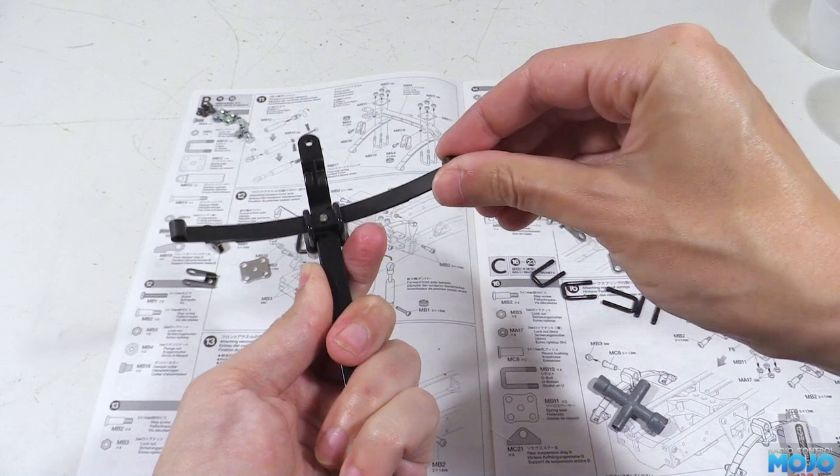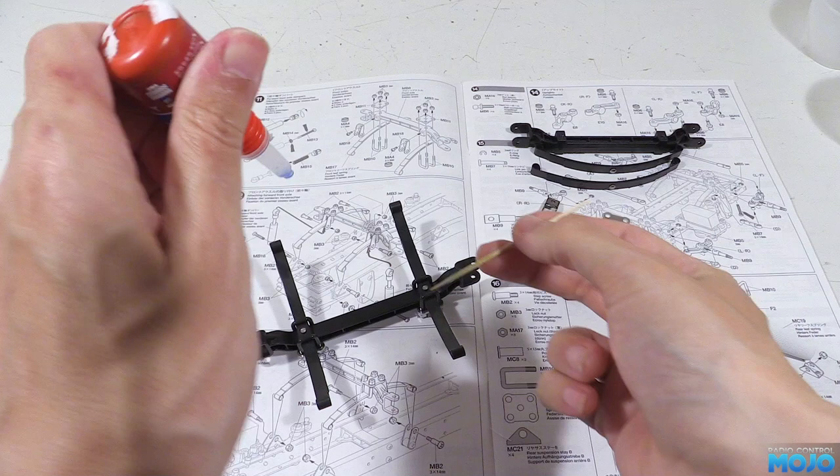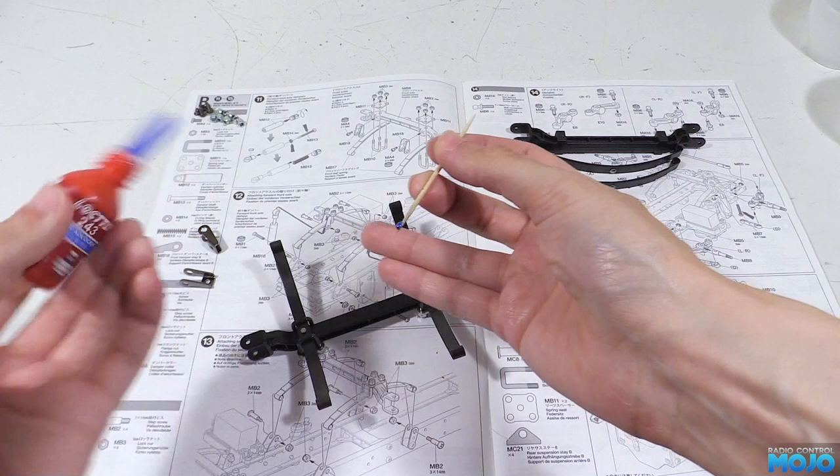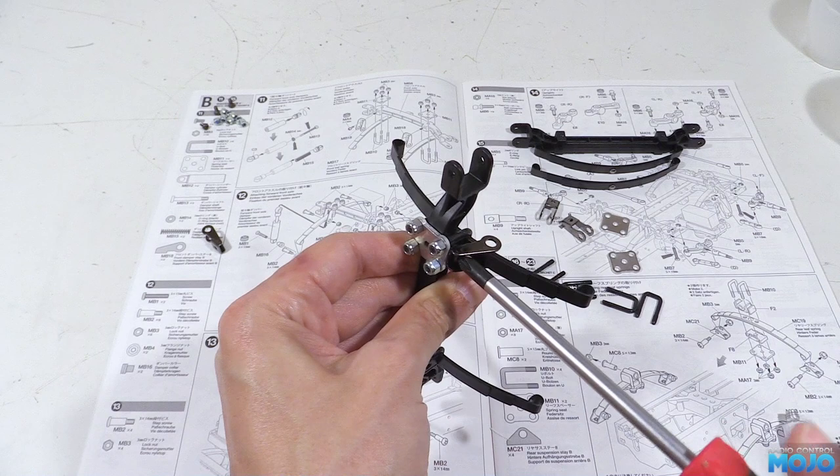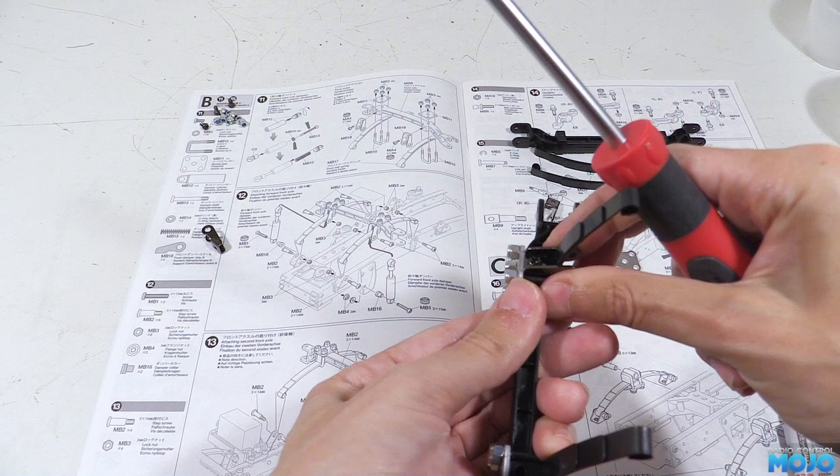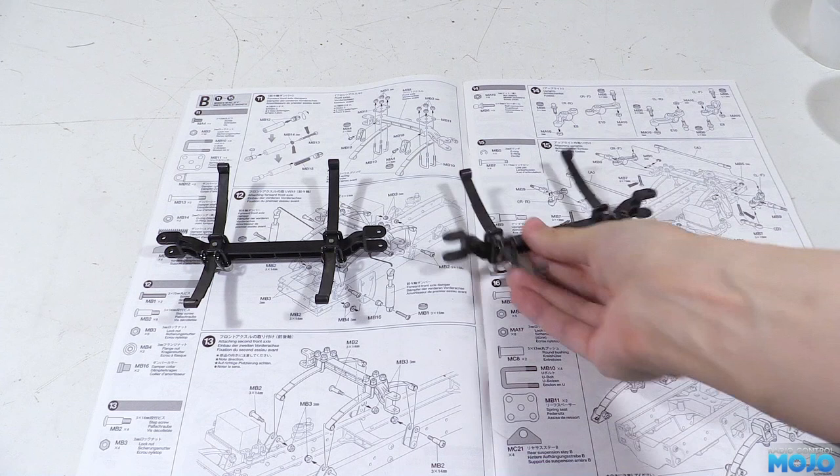Of course the axle needs two springs so we'll install the other one too. Next we have the damper mounts to fit. These use the m3x6s which thread straight into the metal axle so we're going to need to use some thread lock. We'll use a spot on a cocktail stick and stick it in the hole and stir it around. Now we offer up one of the mounts with a screw and thread it in. Repeat on the other side and that's one axle ready to fit. The other one is identical so here it is also ready to fit.